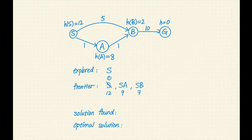Next, S-B has a lower F value. Let's remove B from the frontier and add B to the explored set. B is not a goal node. Let's expand it. B has one successor, G. Let's add S-B-G to the frontier with an F value of 15.